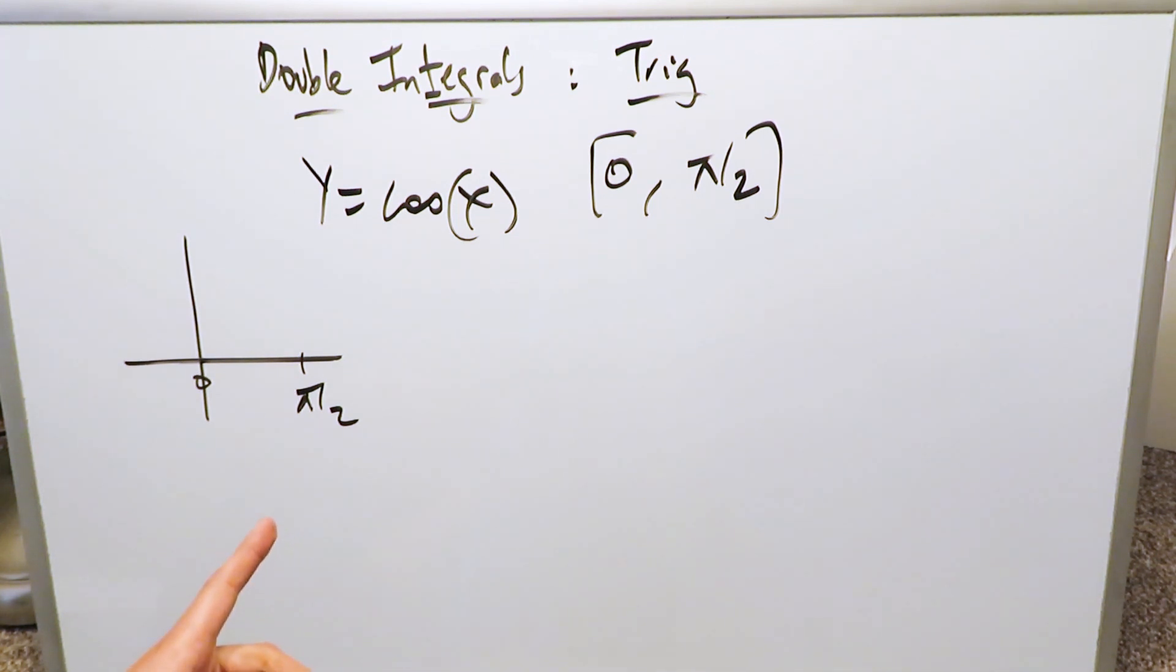At any point we're doing these area calculations and evaluations using double integrals, and then we are looking at a trigonometric function. The calculation can get a little tricky simply because the inverse trigonometric function integral will come into play, and I'll show you that with this example.